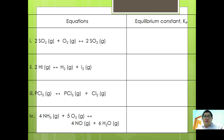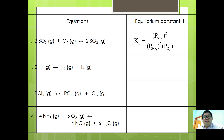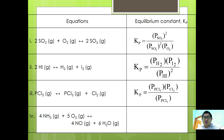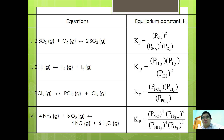A few more examples showing the expression of Kp are shown in the table below. For 2SO2 + O2 ⇌ 2SO3, Kp = P(SO3)² / P(SO2)² × P(O2). For 2HI ⇌ H2 + I2, Kp = P(H2) × P(I2) / P(HI)². For PCl5 ⇌ PCl3 + Cl2, Kp = P(PCl3) × P(Cl2) / P(PCl5). For 4NH3 + 5O2 ⇌ 4NO + 6H2O, Kp = P(NO)⁴ × P(H2O)⁶ / P(NH3)⁴ × P(O2)⁵.